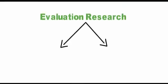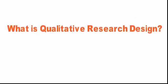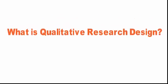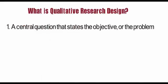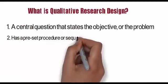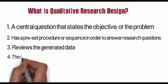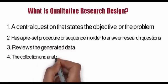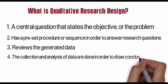There are two types of evaluation research: qualitative research and quantitative research. What is qualitative research design? A central question states the objective or the problem, and has a preset procedure or sequence in order to answer research questions. It reviews the generated data, and the collection and analysis of data are done in order to draw conclusions.